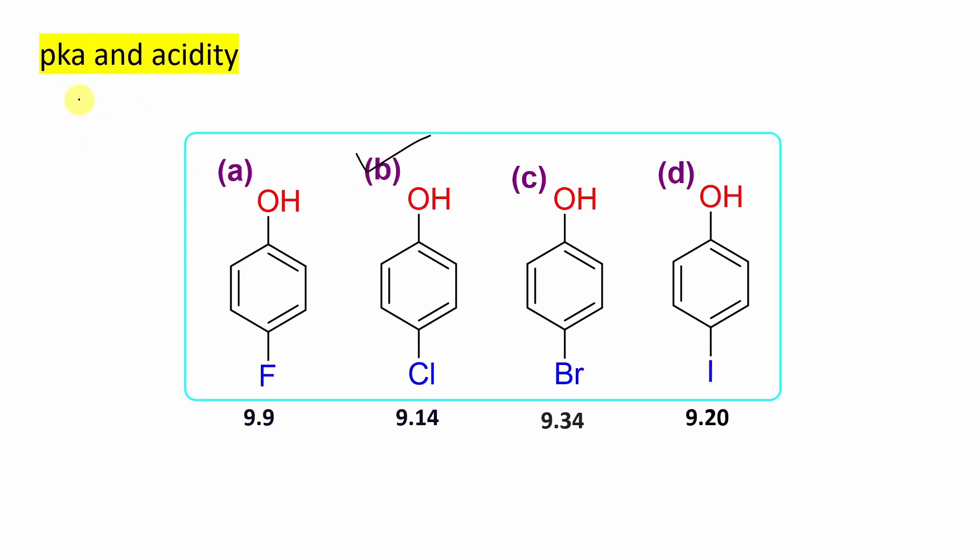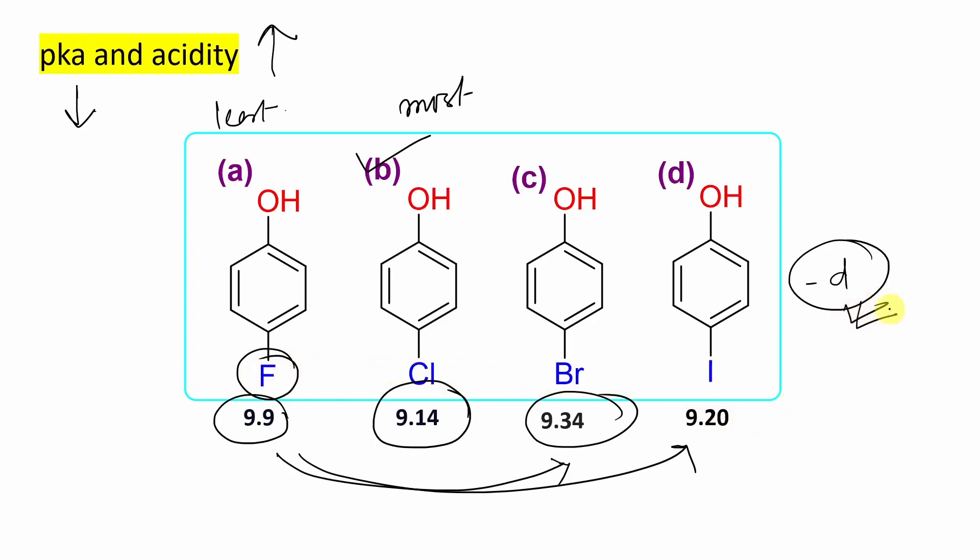Here pKa versus acidity is given. Remember the rule: lesser the pKa, higher the acidity. So 4-chlorophenol has pKa 9.14, whereas 4-fluorophenol 9.9. See the difference. So from this, it is the most and it is the least. And if you look at bromophenol, 9.34 means it is far less compared to fluorophenol. Even iodophenol, that is further less, 9.20. So from this thing it becomes clear that the vacant d-orbital participation plays an important role in stabilizing the conjugate base rather than the minus I effect of this halogen. Because if minus I operates only, fluorine has the strongest minus I. So it is not actually playing that much important role. So d-orbital stabilization is helping to stabilize the conjugate base such that the molecule can show higher acidity.